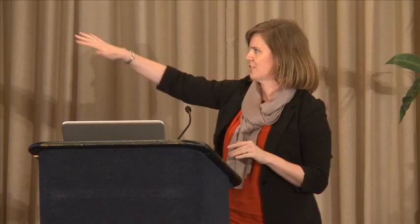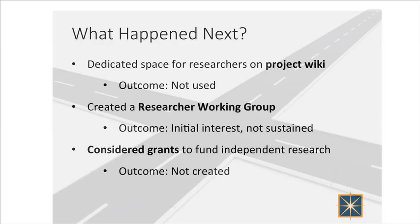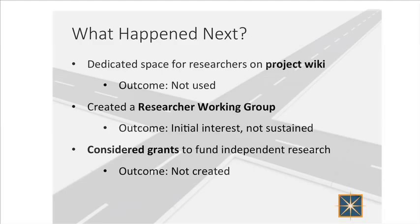We put an event together at the national press club about a month after we launched the National Broadband Map and all seven of the research groups came. They all did presentations on what their initial findings were, talked about whether they were going to be able to go on. One of the research groups was not looking for how they could link it with other data sets — they were talking about everything they'd found that was wrong. That was challenging, but it was also the nature of the beast, and we were prepared to say: how do we take that to continue improving this data set? We thought this was really successful, so we built out a dedicated space for researchers on our wiki. It never got used. We created a researcher working group. There was initial interest, but it wasn't sustained. We considered small grants to try to fund ongoing research — that didn't work either.